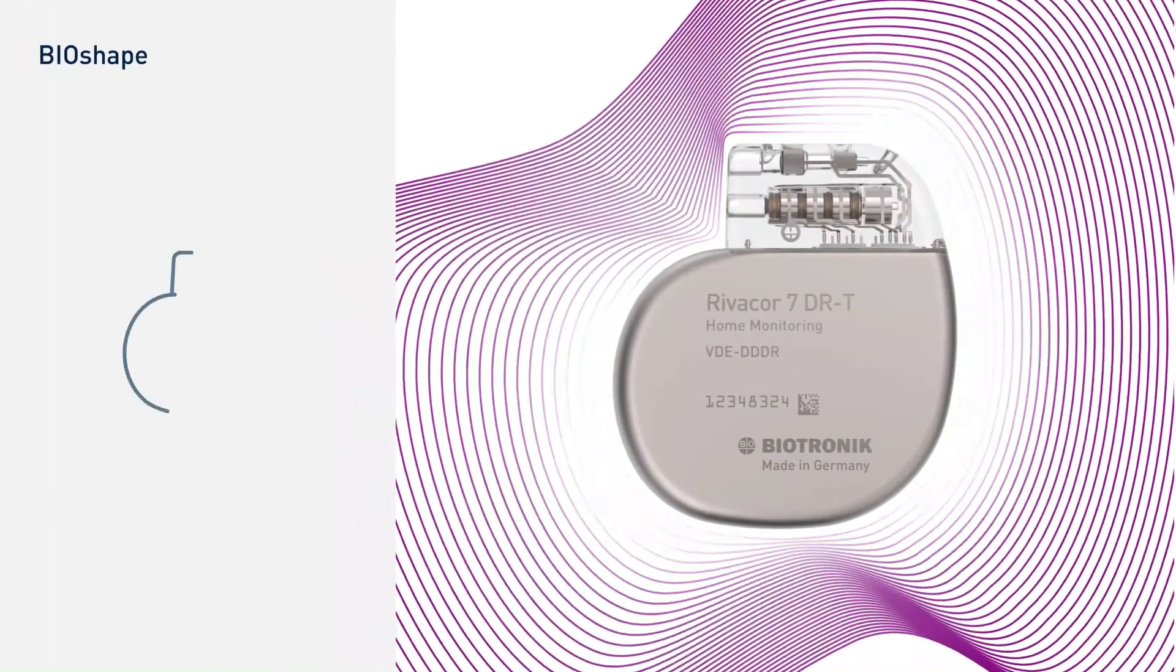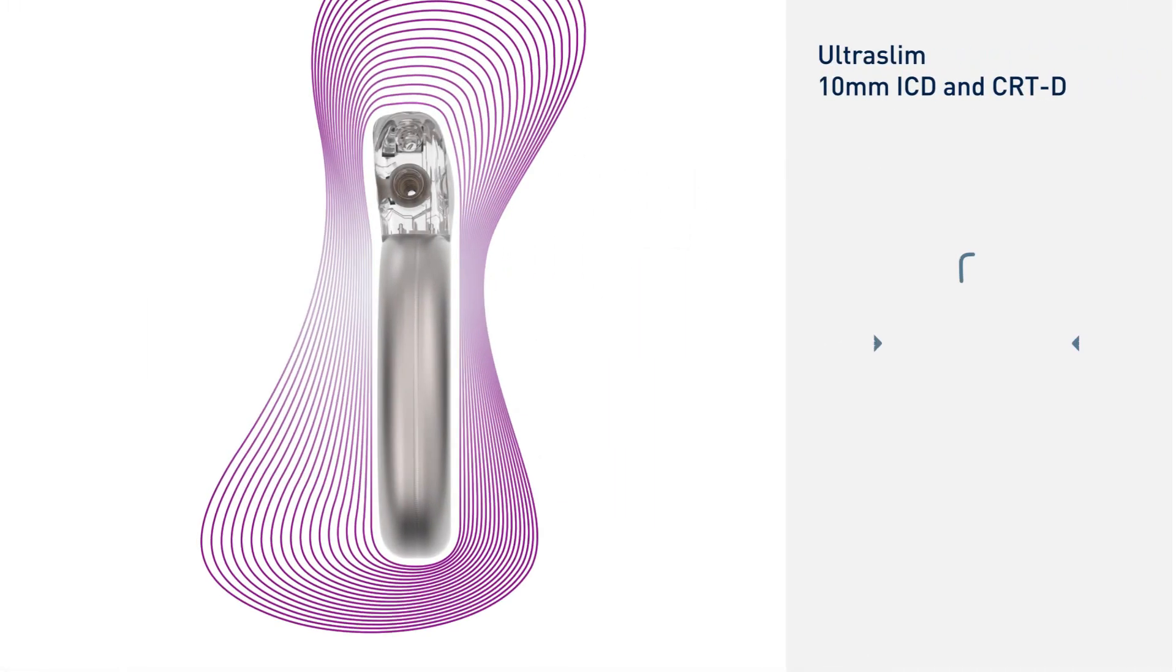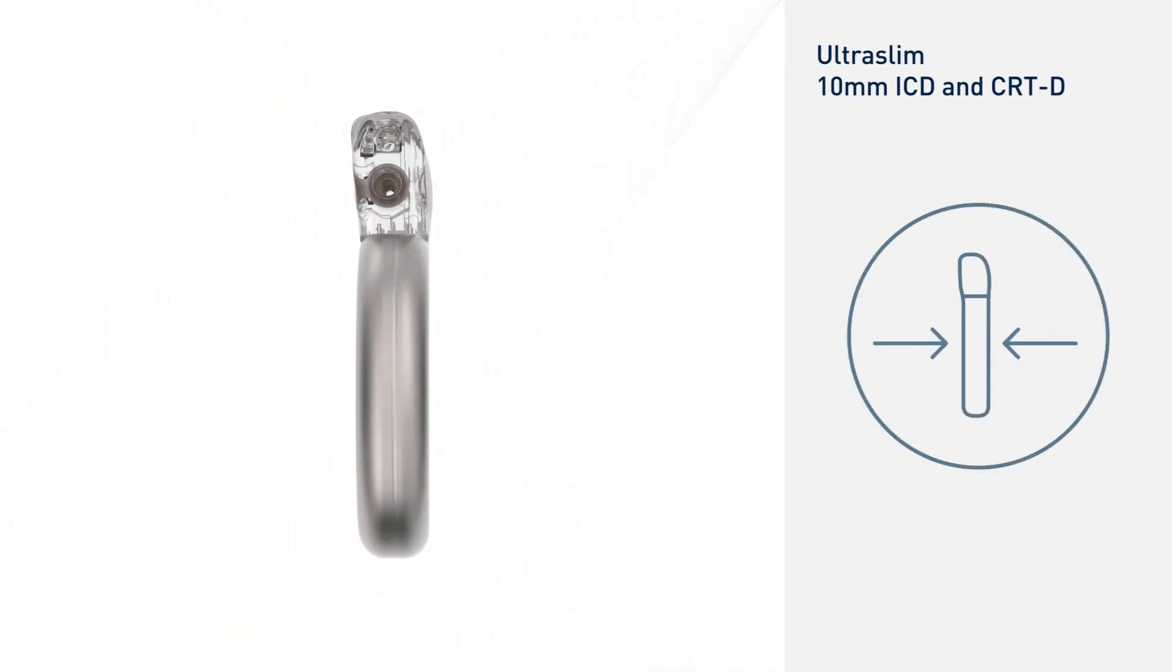ICDs, however, can stimulate the heart at a much higher voltage as compared to a pacemaker. The maximum voltage an ICD can achieve is 800 volts as opposed to 8 volts in a pacemaker system.